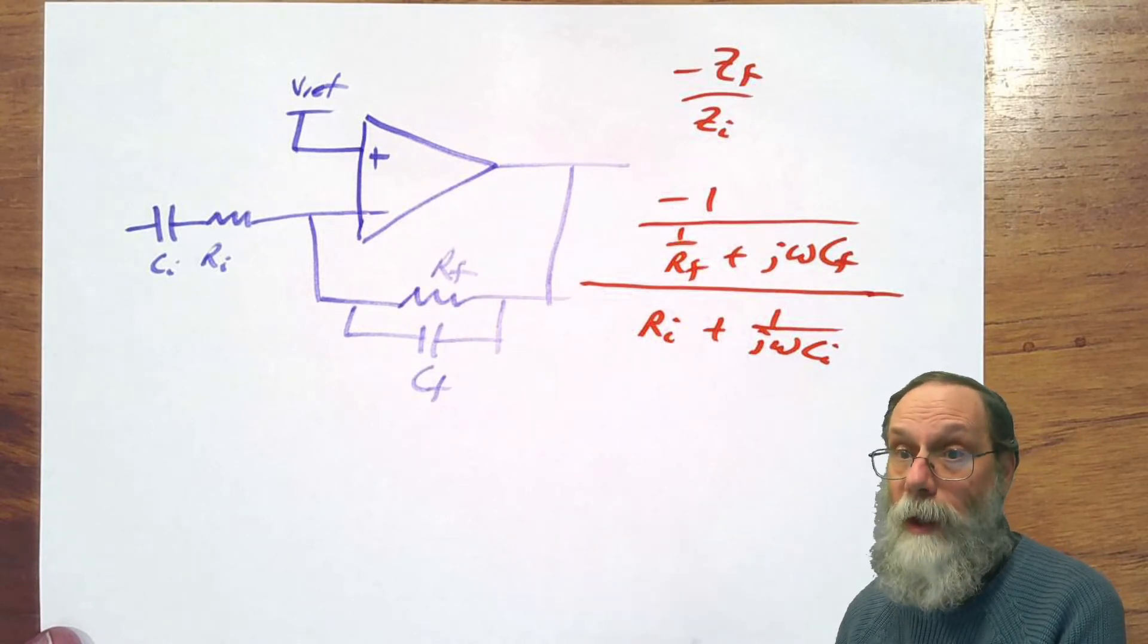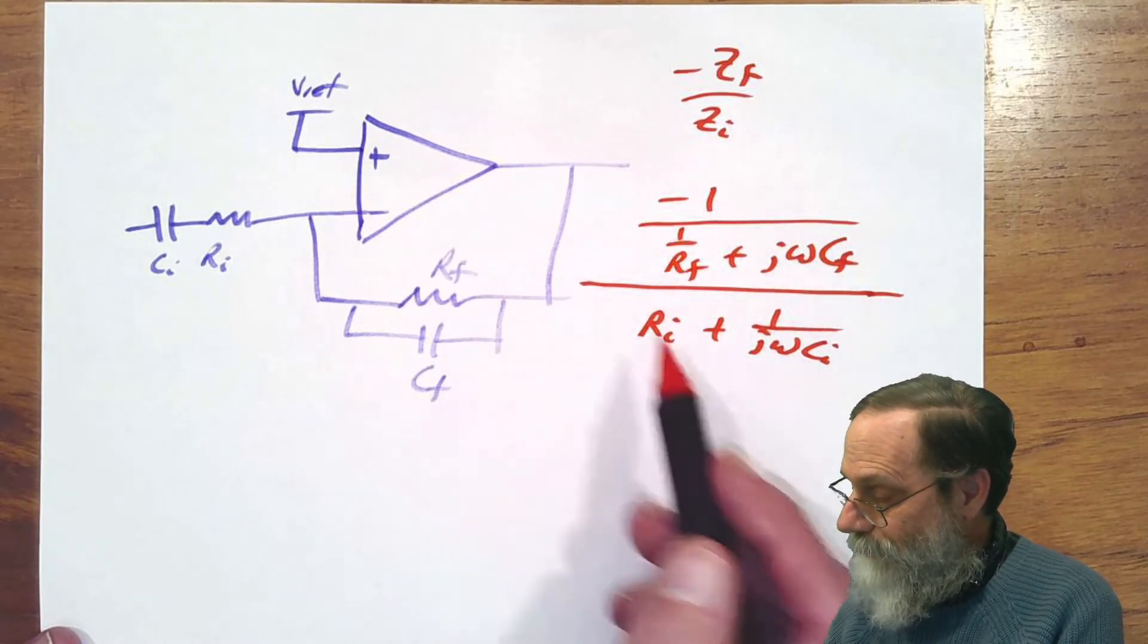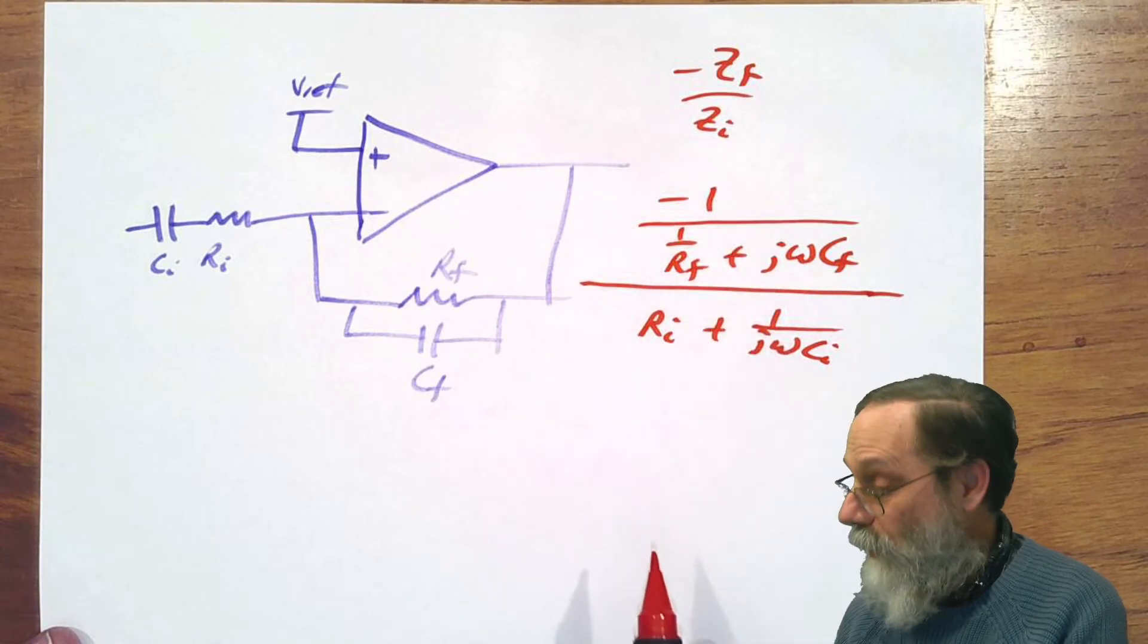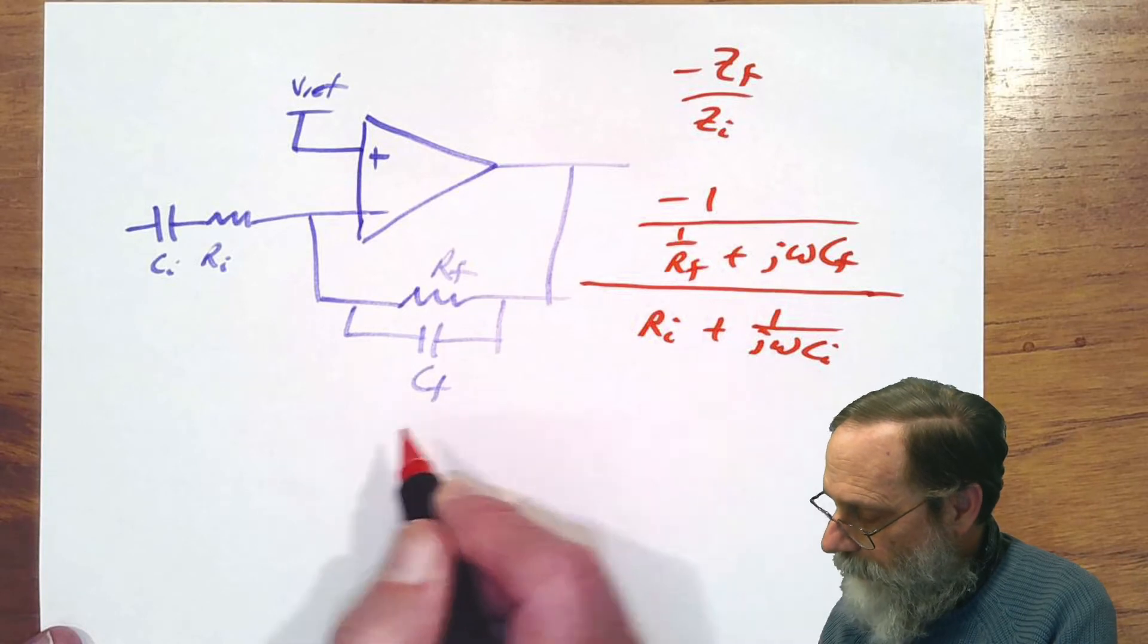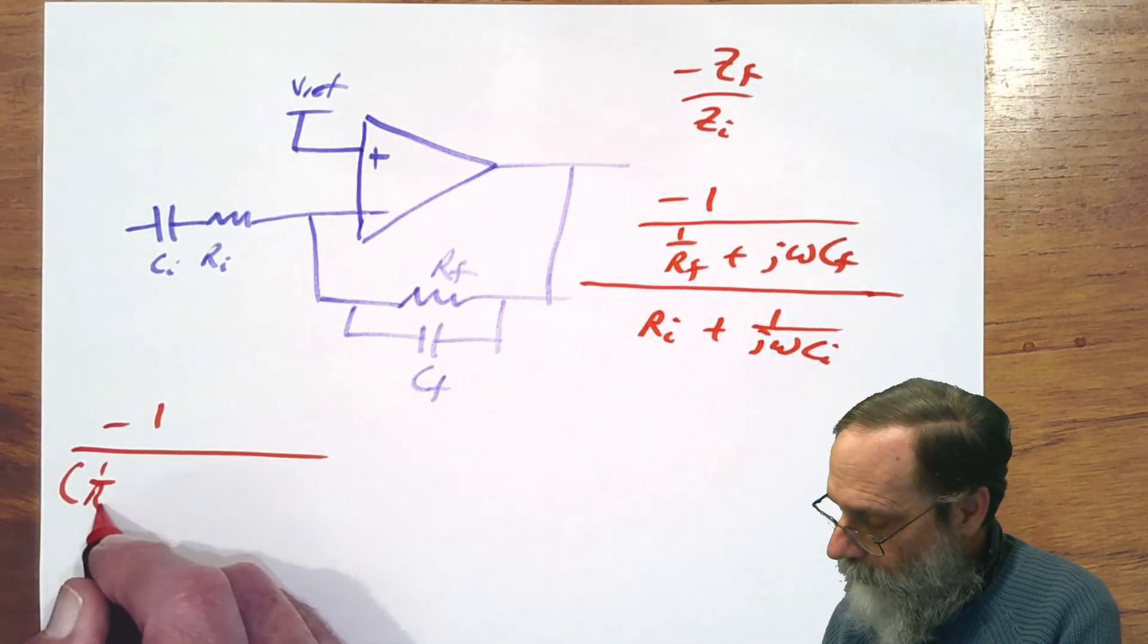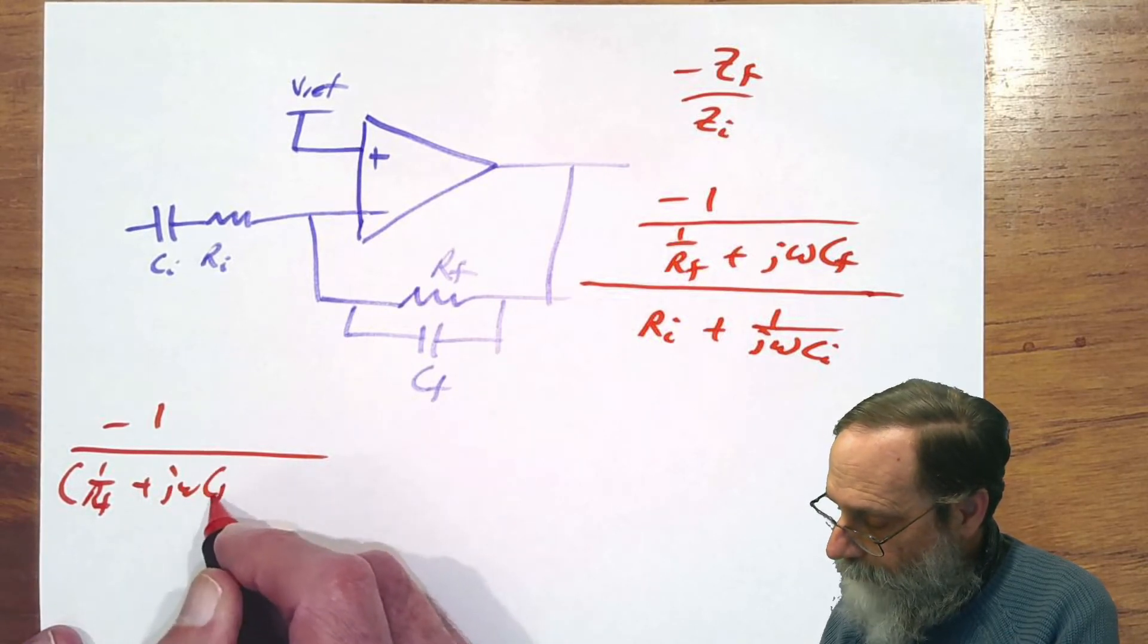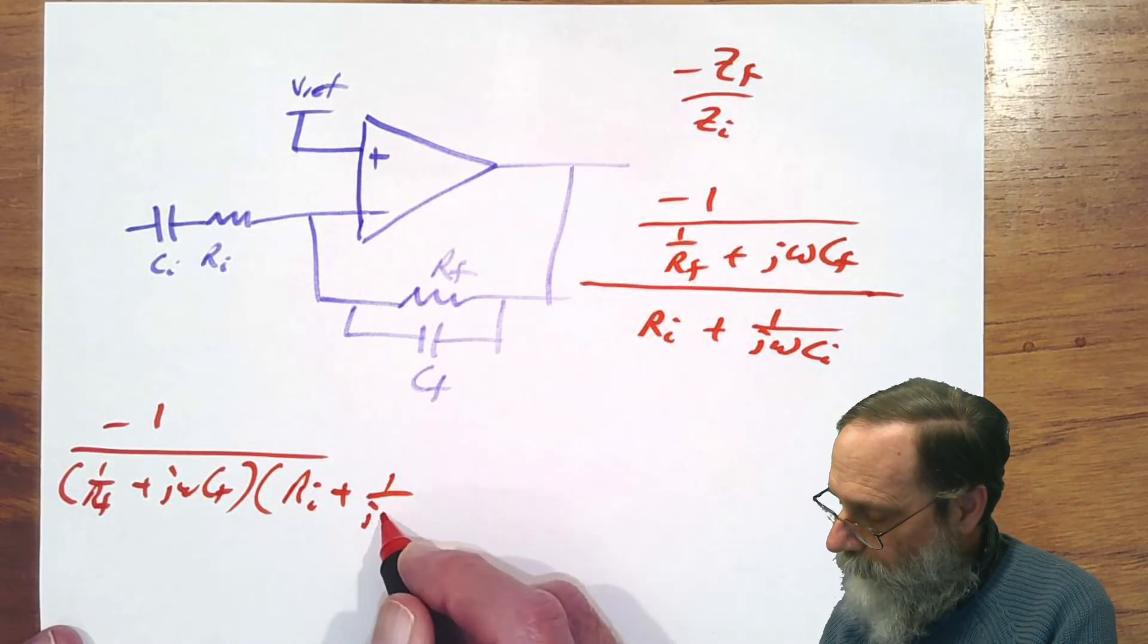That looks pretty messy because we have fractions inside of fractions. We can simplify things quite a bit if we take this part and move it down and multiply top and bottom by Rf. Let's just do one step at a time.